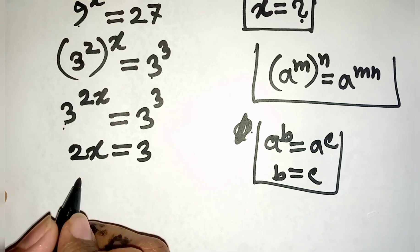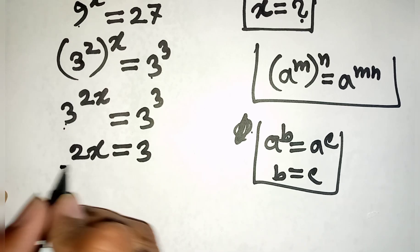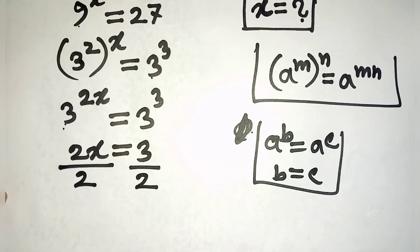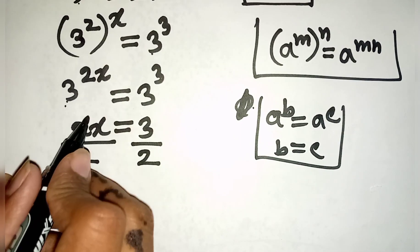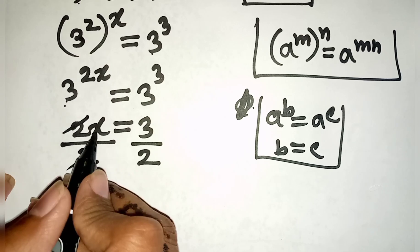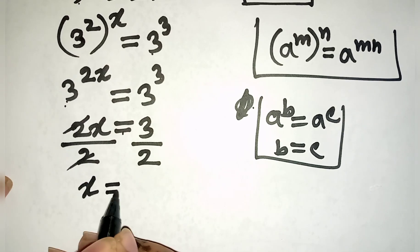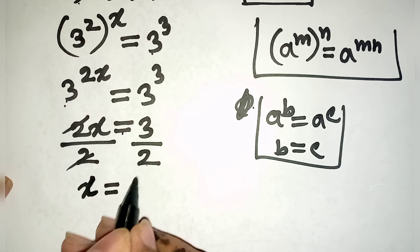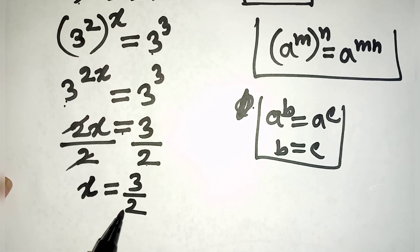Now we need the value of x, so we divide both sides by 2. This 2 and 2 will be cancelled, so x is equal to 3 divided by 2. So this is the value of x.